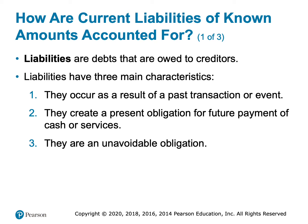All liabilities, whether current or long-term, have three main characteristics. Number one, they occurred as the result of a past transaction. So something has happened in the past that causes us to have a present obligation for a future payment — something has already happened that means we owe someone in the future. The other key characteristic is that they are unavoidable — it's not something we can get out of.